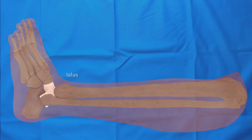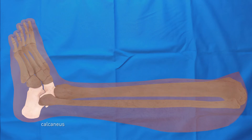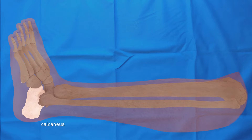The talus is a tarsal bone that articulates with the tibia proximally, the calcaneus posteriorly, and the navicular bone of the foot anteriorly. The calcaneus is the largest tarsal bone, forming the bony part of the heel.